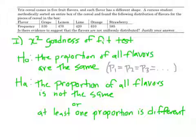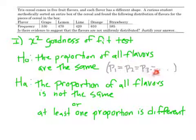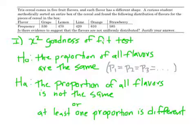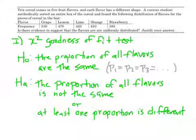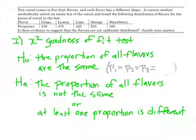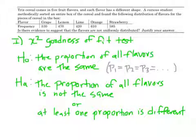For chi-squared tests, it's tough to write H0 and HA in symbols, so usually we do it as a sentence. Our H0 is: the proportion of all flavors are the same. You could write P1 equals P2 equals P3 equals P4 equals P5, but usually we just write it in English. Our alternative hypothesis is: the proportion of all flavors is not the same — or equivalently, at least one proportion is different. Don't write 'not equal to' for all of them, because we're not saying they're all different; we're saying at least one is different.